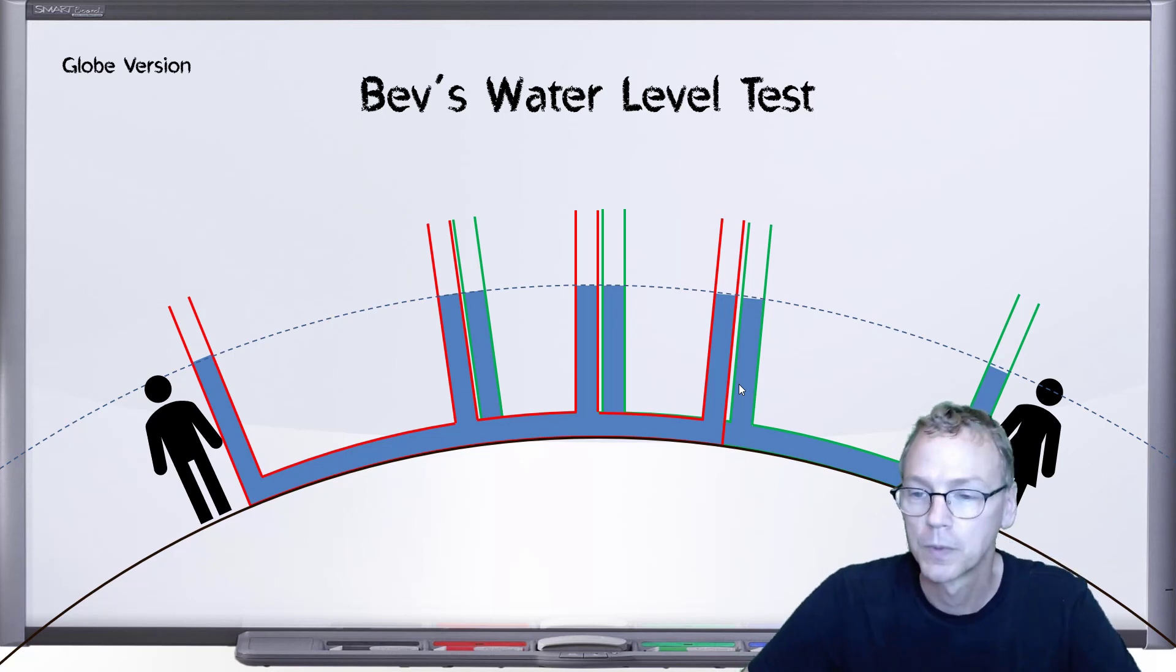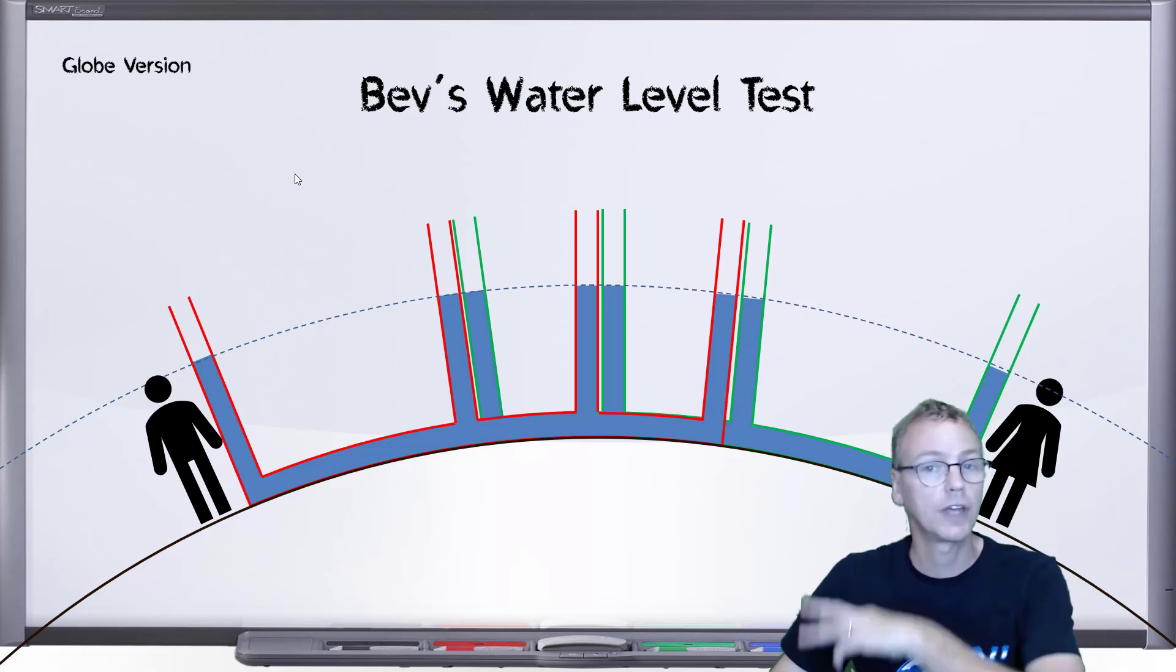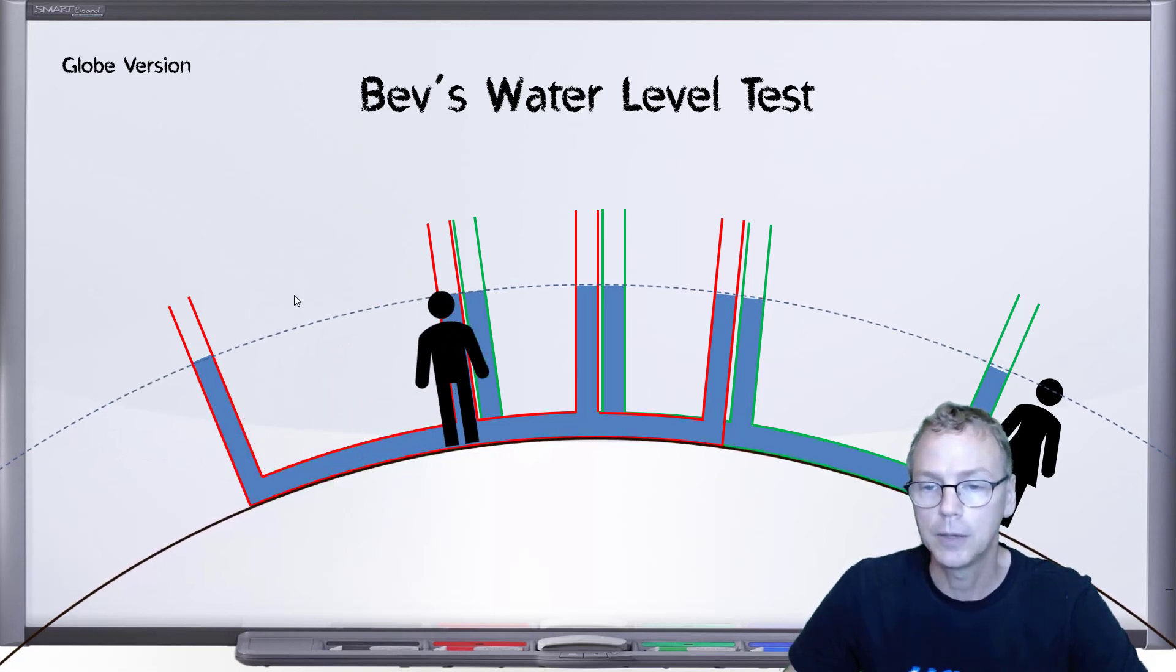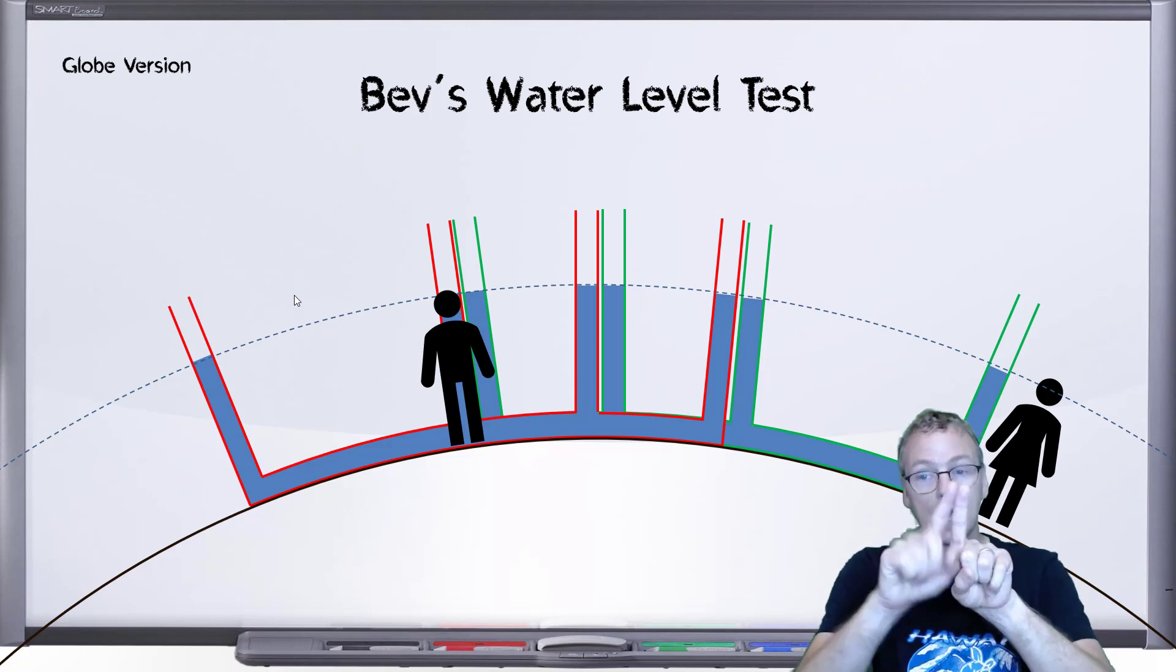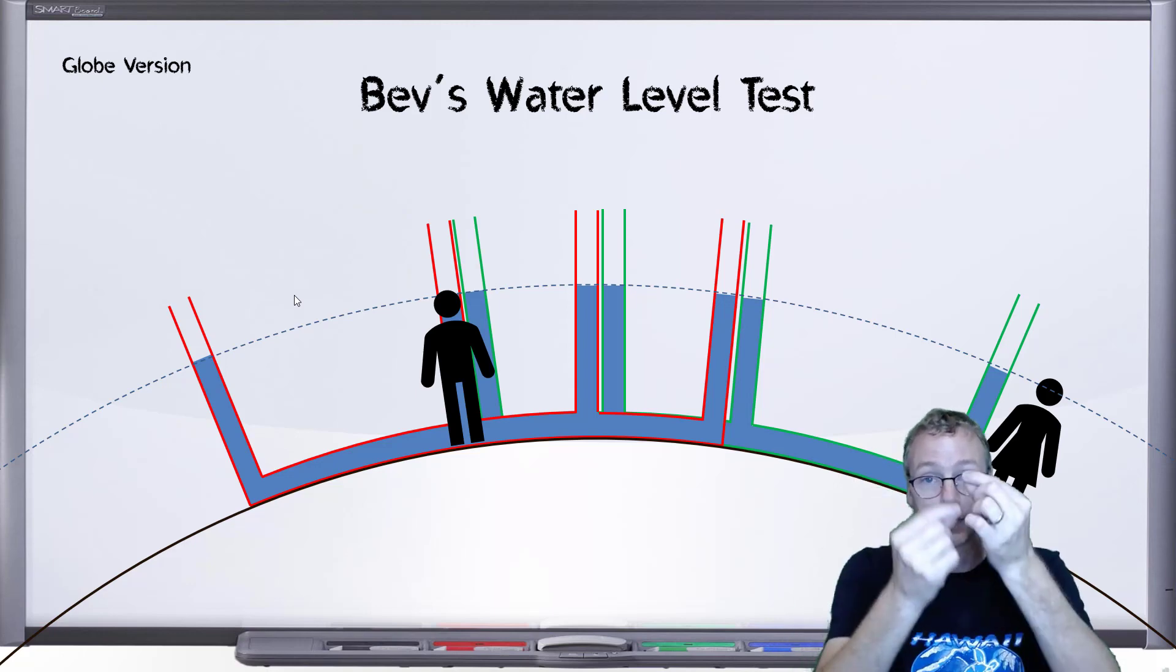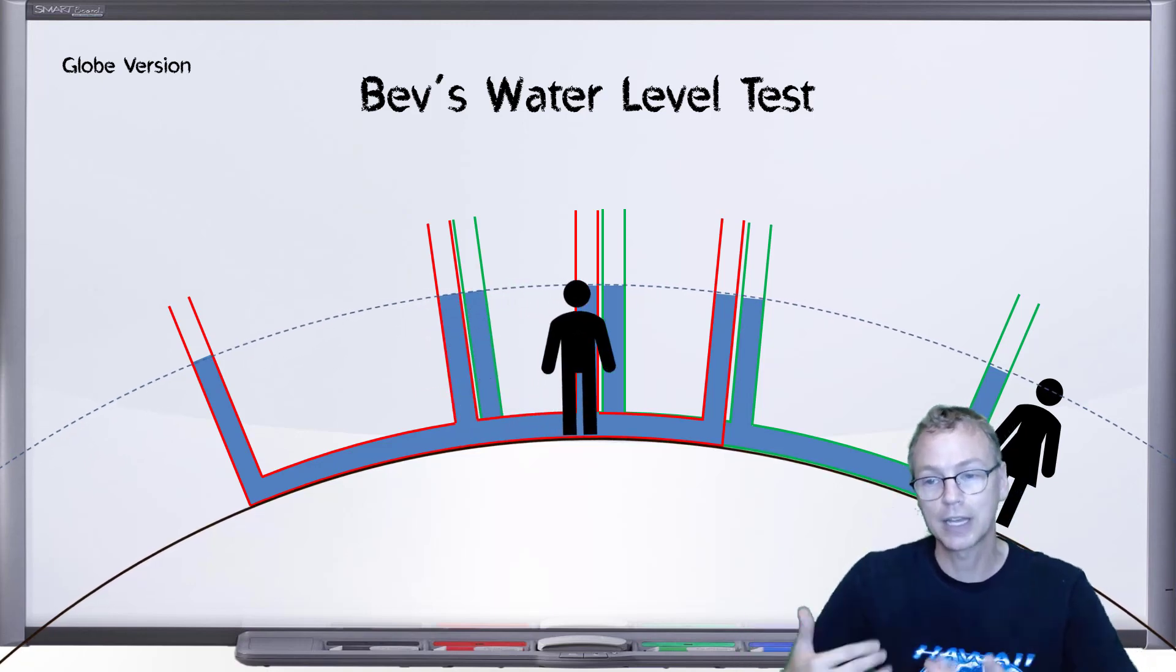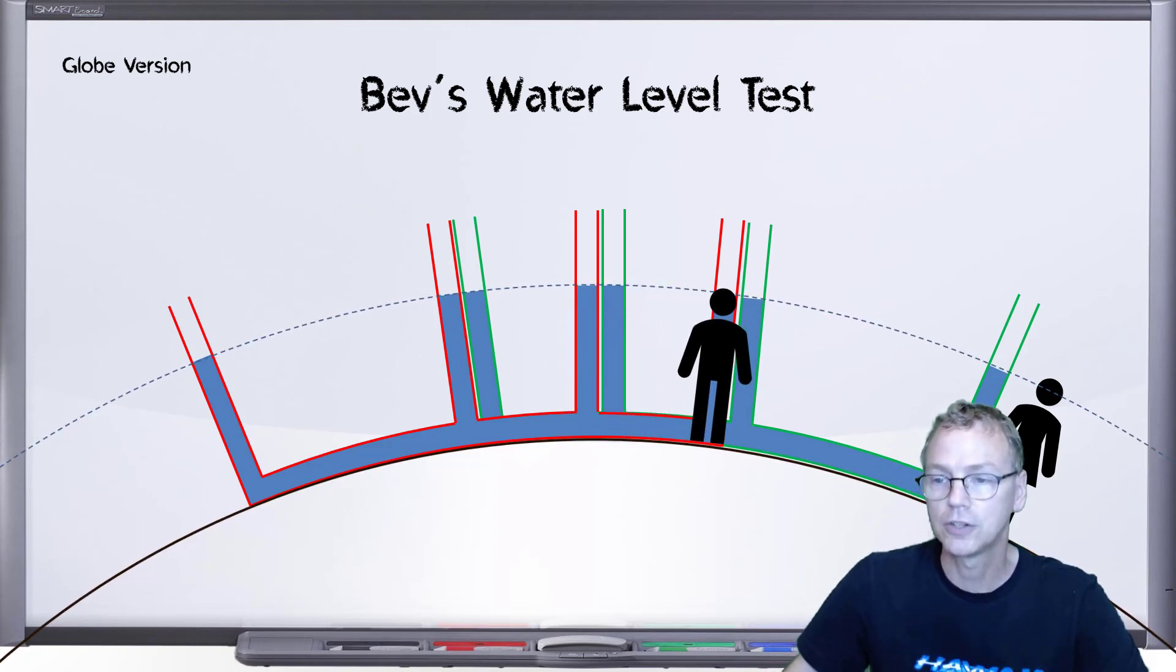So let's perform that same test that we did before and we'll just show it on this diagram and see how it differs. So we start at the one end and the observer walks to the first pair of risers and measures the difference between the two water levels, and then he walks to the second pair of risers, measures the difference, the third pair of risers, measures the two distances, and then we're done.